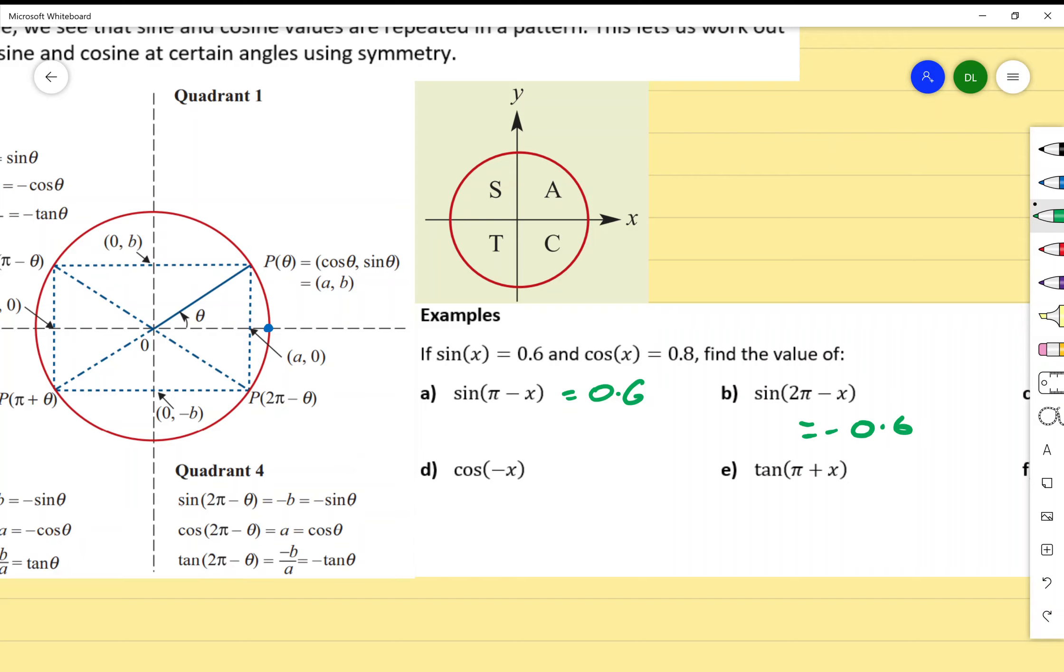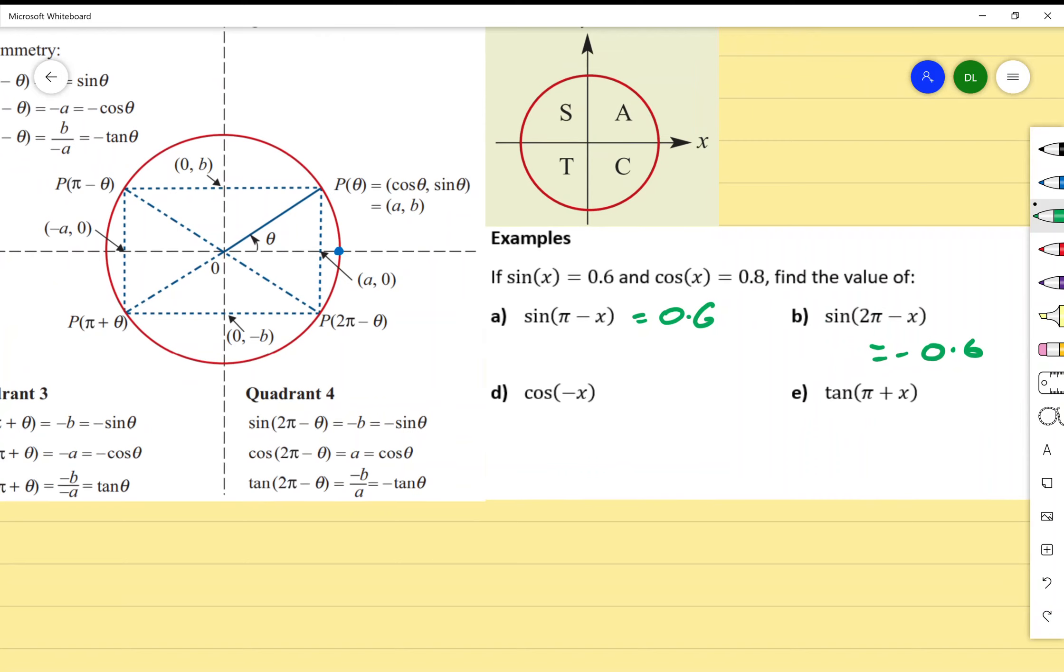Let's do cosine of negative x. Negative means we go clockwise, which means we'd go this way, wouldn't we? That's negative x, and if we're in this quadrant here, then we know, is cosine positive or negative in this quadrant? Sorry, it's positive because it says cosine here, which means it's positive. So equals, and I use that cosine value, so 0.8.